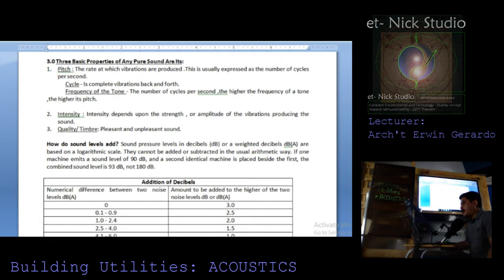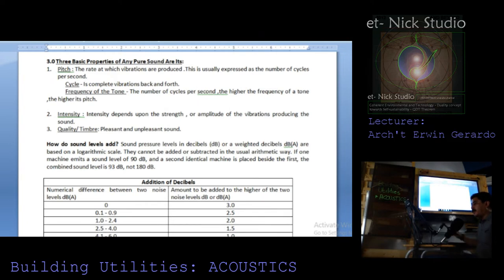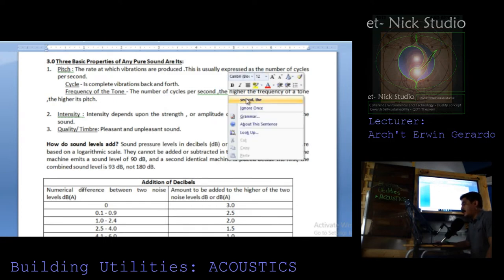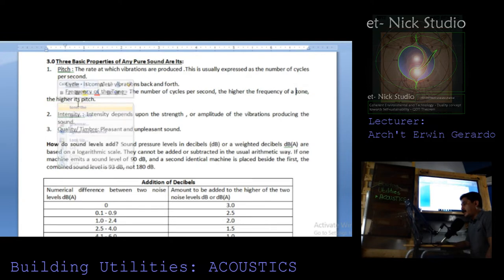Three basic properties of any pure sound are: pitch — the rate at which vibrations are produced, usually expressed as cycles per second; frequency — the number of cycles per second, where higher frequency means higher pitch; and intensity — which depends on the strength or amplitude of vibrations producing the sound; and quality or timbre — whether the sound is pleasant or unpleasant.